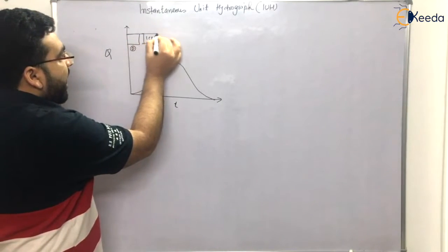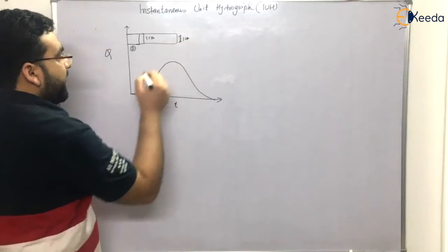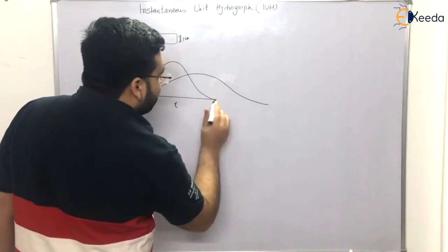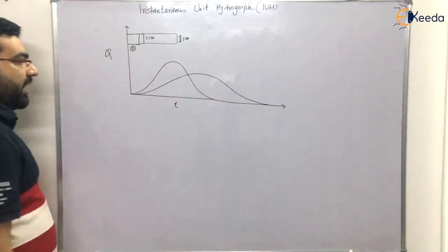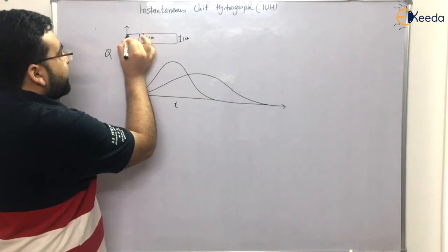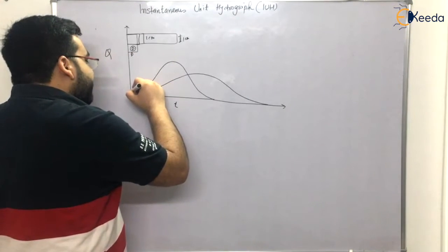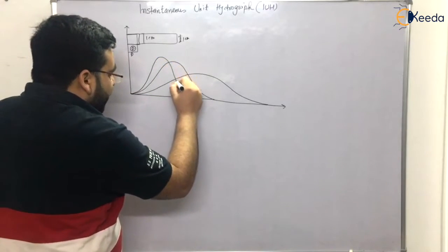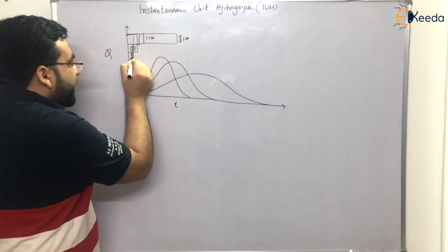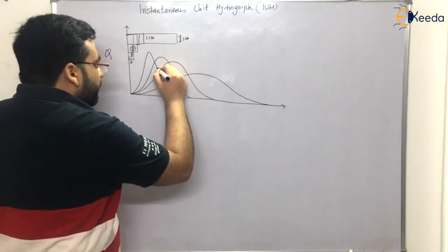If the duration of rainfall is very large, but for the same rainfall depth of one centimeter, the curve would be much fatter like this, and the base period will also be high. If the duration decreases, the curve becomes like this — narrower. The duration can still reduce further, becoming very small D, and the curve becomes very skewed like this.